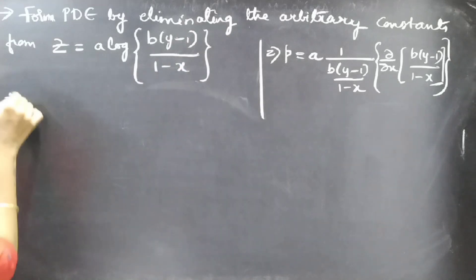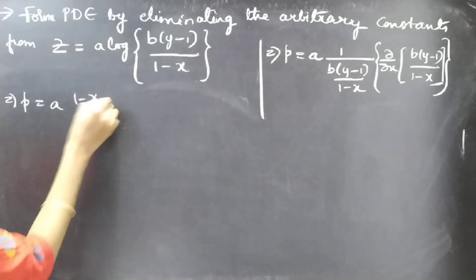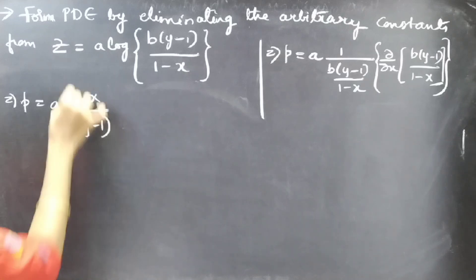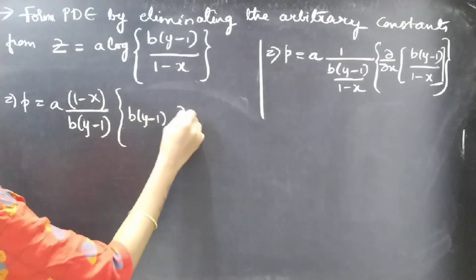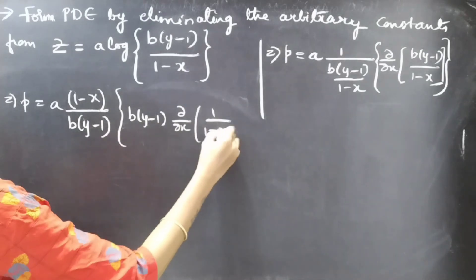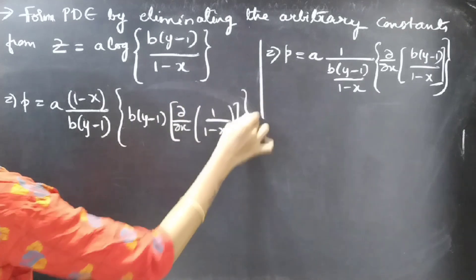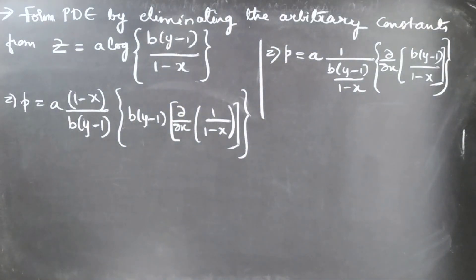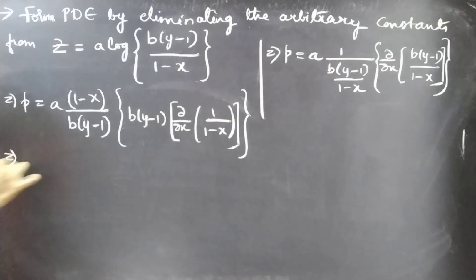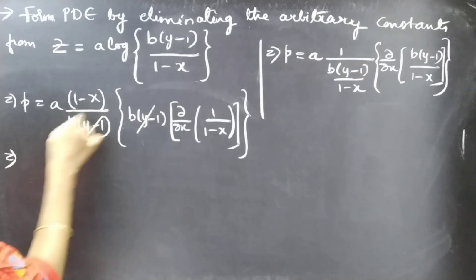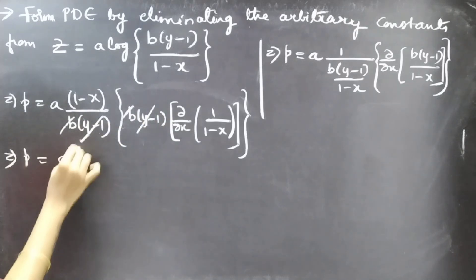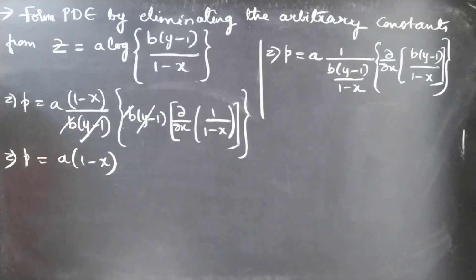We can write this as p = a·(1-x)/(b·y - 1) into the partial derivative of 1/(1-x), treating b·y - 1 as constant since we are differentiating with respect to x. The b·y - 1 terms cancel out.